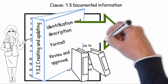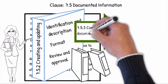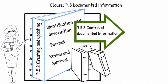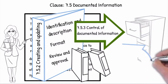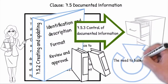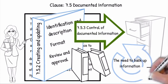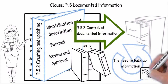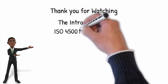7.5.3 Control of Documented Information: The OHS documented information must be available and suitable for use, where and when it is needed, particularly aimed at preventing unintended use of obsolete documented information. All records must be archived and be retrievable when needed.